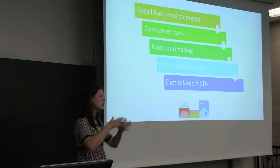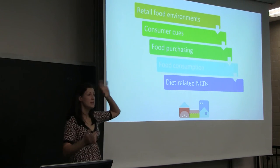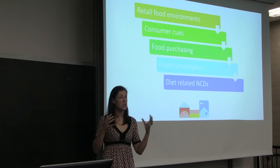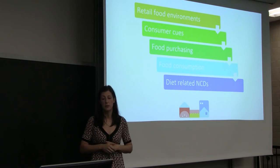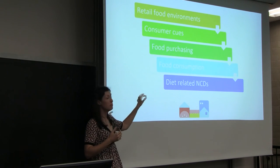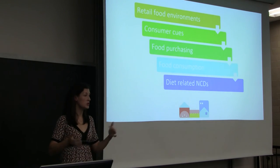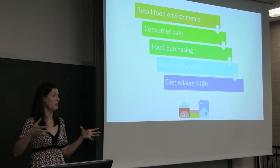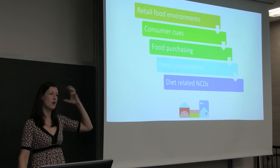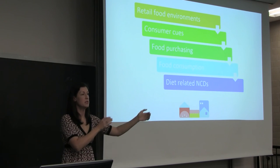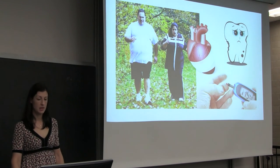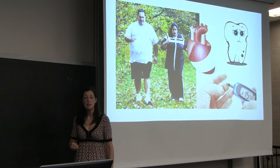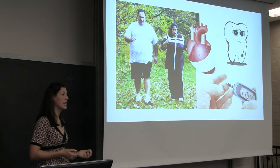Theoretically, why do you care about food environments? There's a conceptual chain: some aspect of the retail food environment gives cues to consumers to buy one food over another. Consumers interpret those cues and purchase foods based partly on them. Then they consume those foods — though much goes to waste. After a lifetime of a specific dietary pattern, this links to diet-related non-communicable diseases. Food is highly linked to chronic diseases including obesity, heart disease, tooth decay, diabetes, and types of cancer.